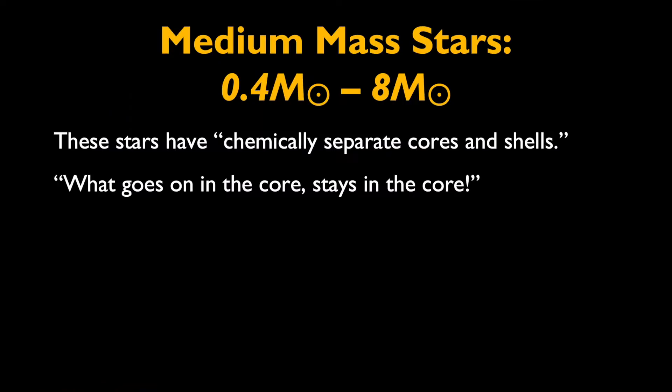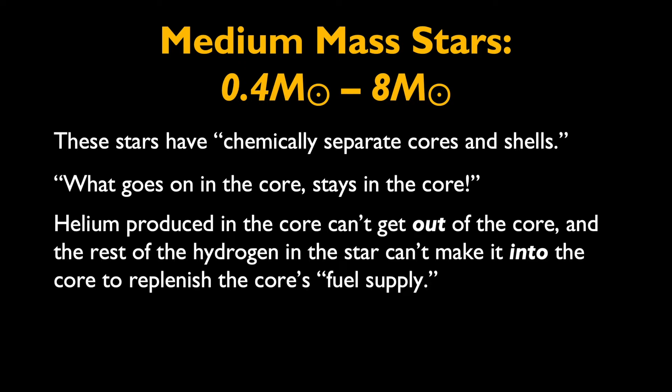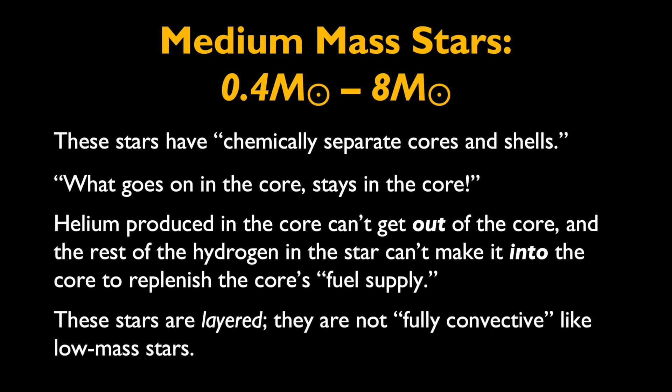What happens in the core of a medium-mass star stays in the core of that star. This means that the helium produced in the core can't get out of the core, and the rest of the hydrogen in the star can't penetrate the core to get in and replenish its fuel supply. That's what it means to have chemical separation, when the layers don't mix efficiently and are essentially separated. These medium-mass stars are layered. They are not fully convective like the low-mass stars.